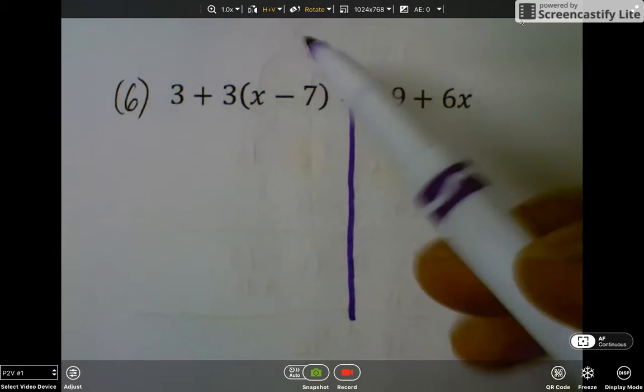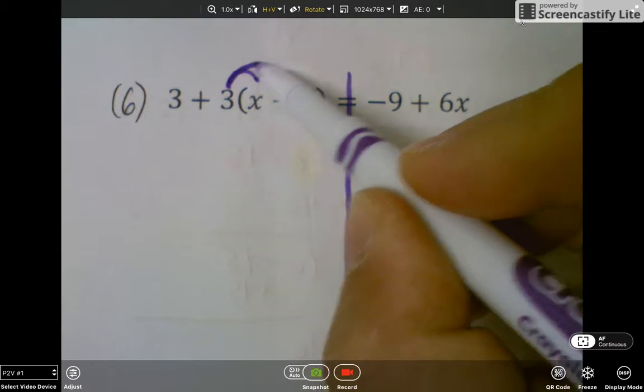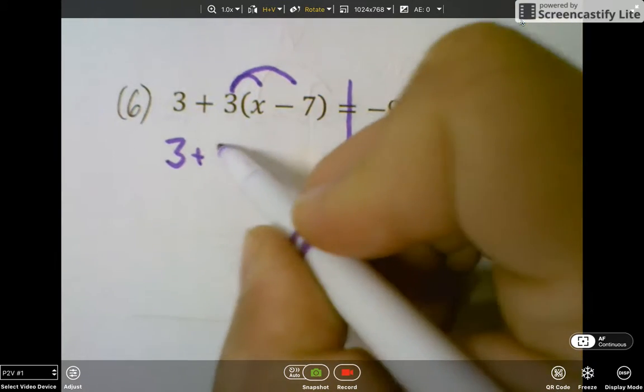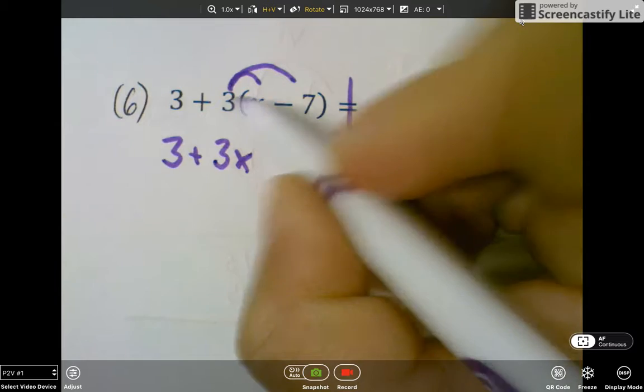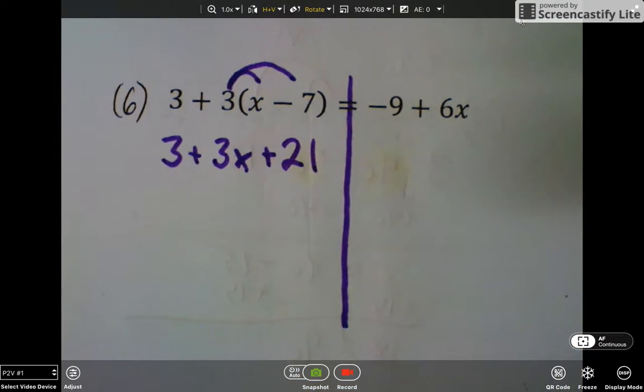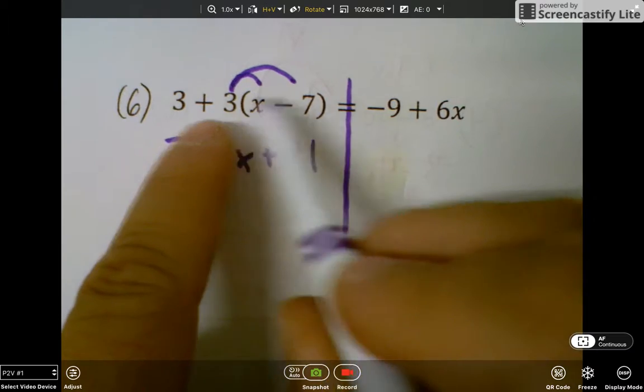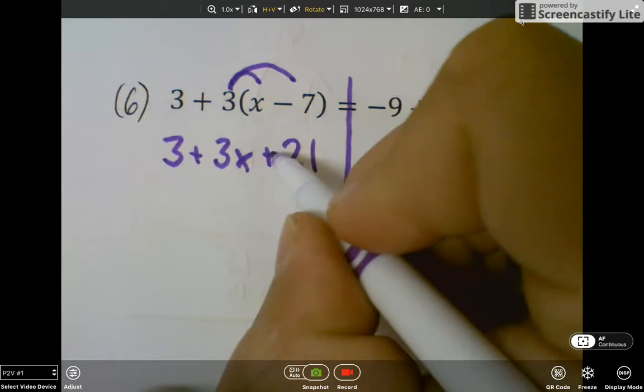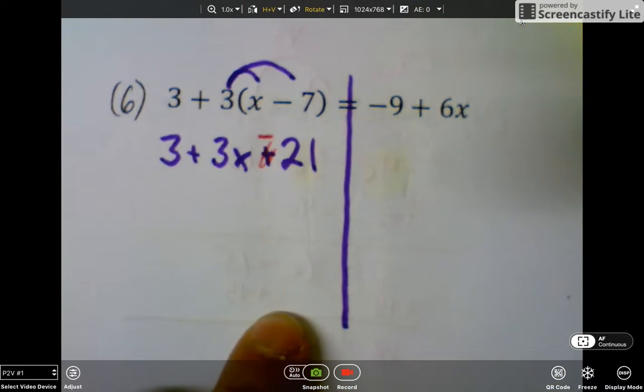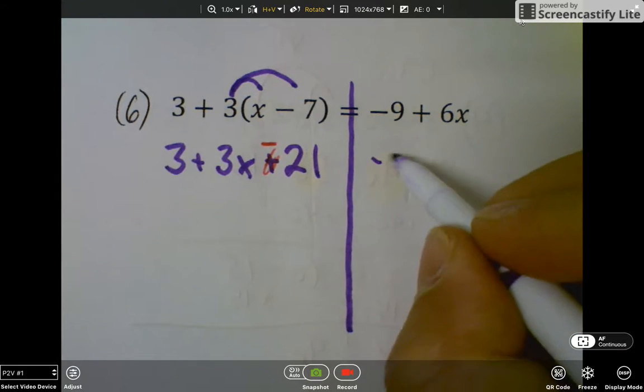So the first thing I'm going to do is distribute the 3. That's going to give me 3 plus 3 times x is 3x. And then I'm going to write plus 21. Remember, we have to see this minus 7 as a negative 7. So 3 times negative 7 is going to be, I'll fix it here, a negative or minus 21. On the right side I'm just going to rewrite what I had because there's no combining like terms and there's no distributive property.